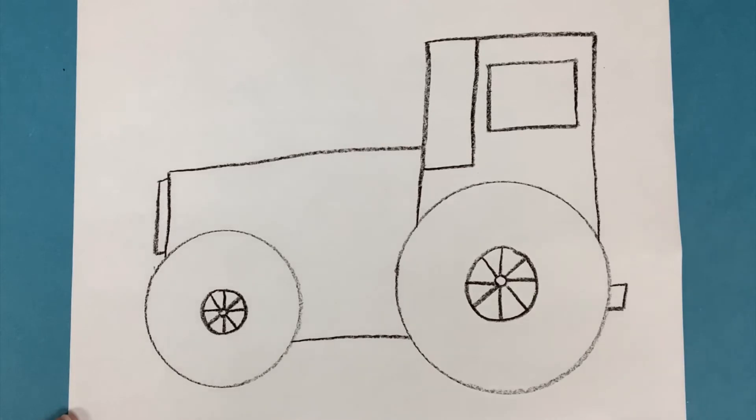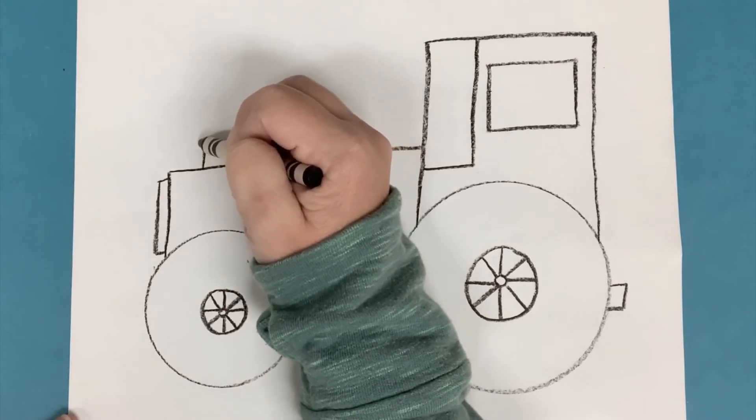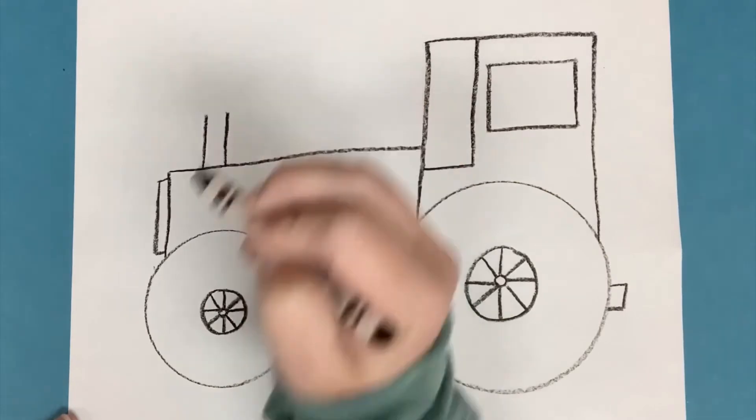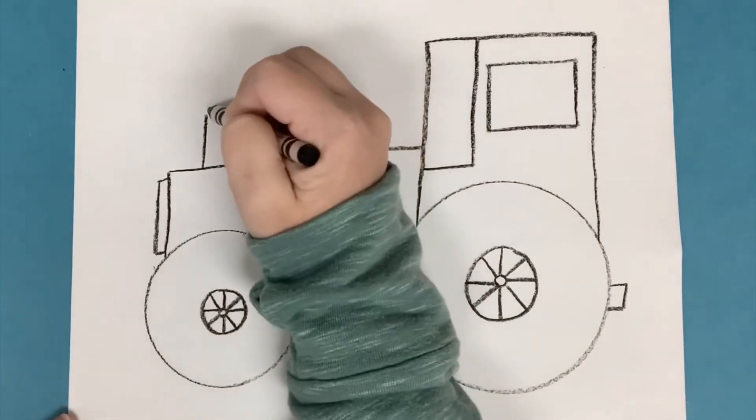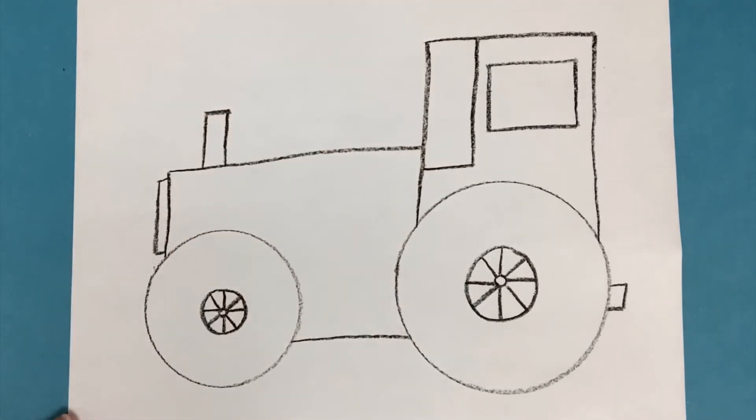Okay, now we are going to make some more exhaust pipes. These are going to be coming off the front of the tractor. So I'm going to draw a vertical line. It's a little bit taller. Another vertical line that's about the same. And then a short horizontal line to close it up so that we make another little rectangle.